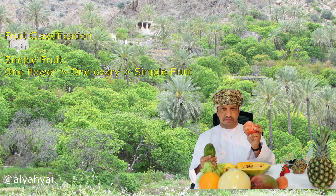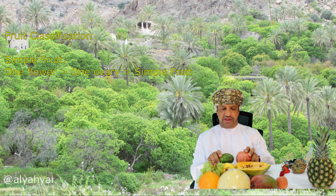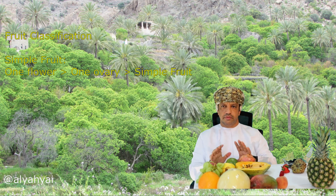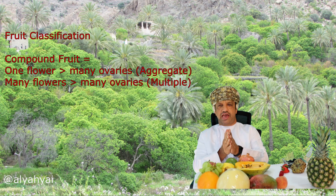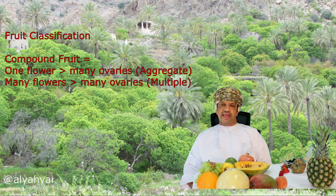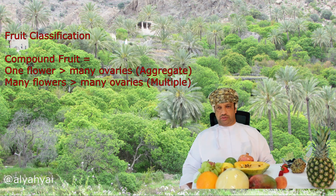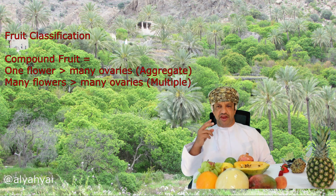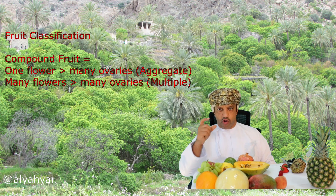So what happens if you have one flower but more than one ovary, or if you have more than one flower that made up the fruit? In that case we don't call them simple fruit — we call them compound fruit. Compound means they are made of more than one ovary.